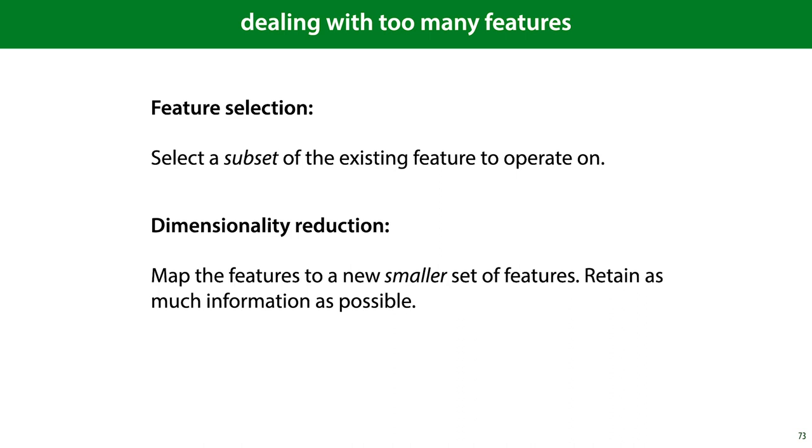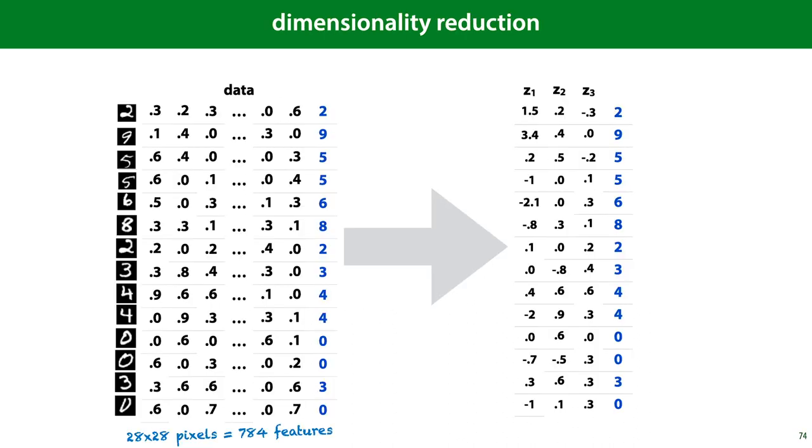In this video, we'll look at just one dimensionality reduction method, Principal Component Analysis, or PCA. Dimensionality reduction is the opposite of the feature expansion trick we saw earlier. It describes methods that reduce the number of features in our data, the dimension, by deriving new features from the old ones, hopefully in such a way that we capture all the essential information.